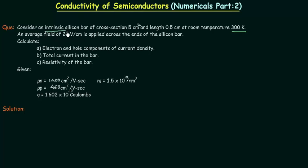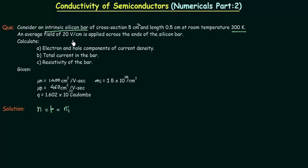We have an intrinsic silicon bar, meaning an intrinsic semiconductor. In case of intrinsic semiconductors, the concentration of electrons n is equal to the concentration of holes p, and both equal Ni, the intrinsic carrier density. An average electric field intensity E of 20 volts per cm is applied across the ends of the silicon bar.